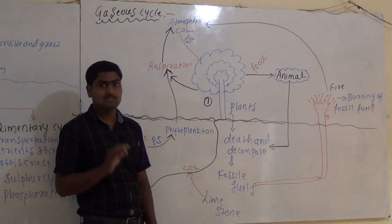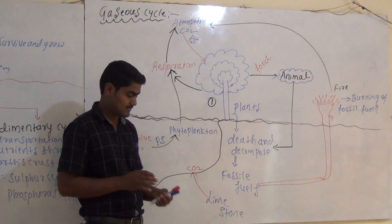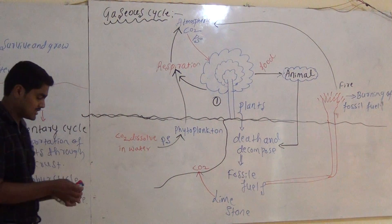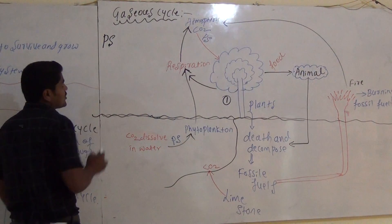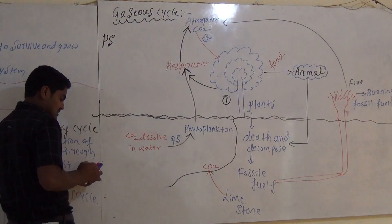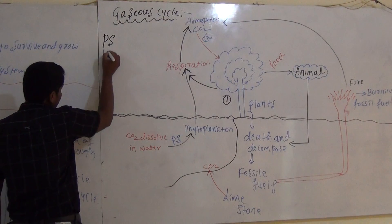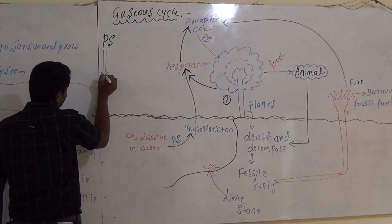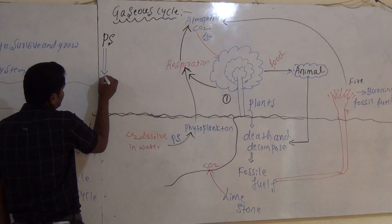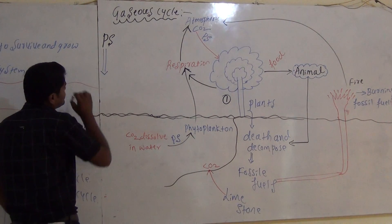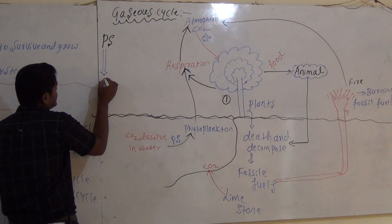These plants undergo photosynthesis. Photosynthesis is very simple — the plant takes in carbon dioxide from the atmosphere as part of the photosynthesis mechanism.